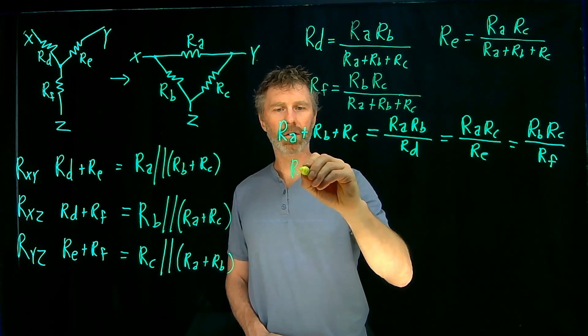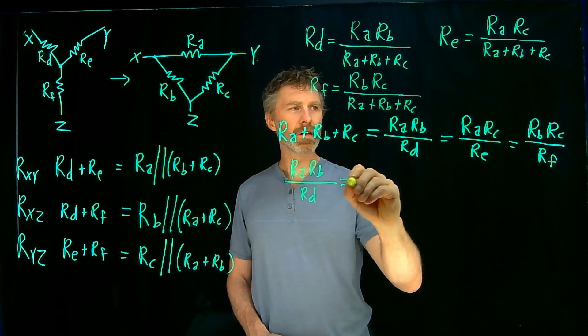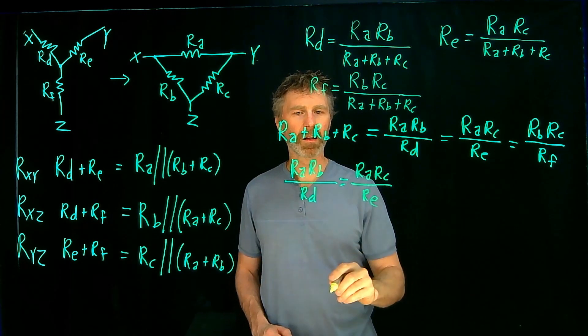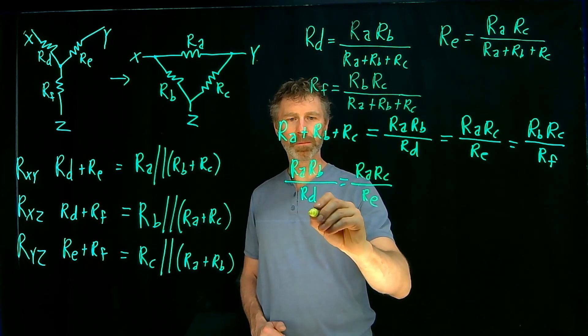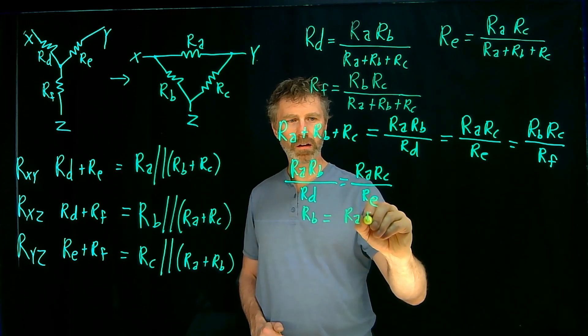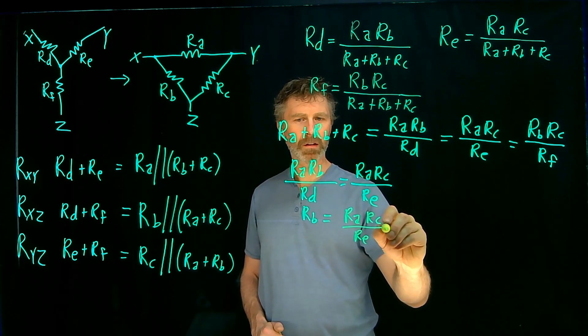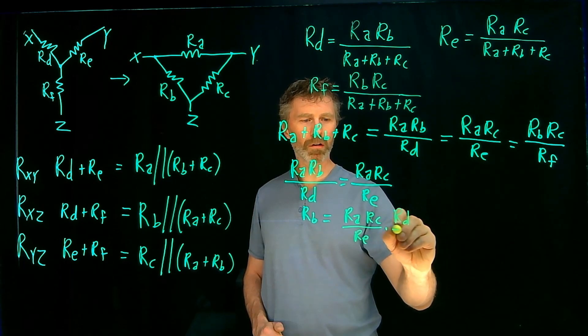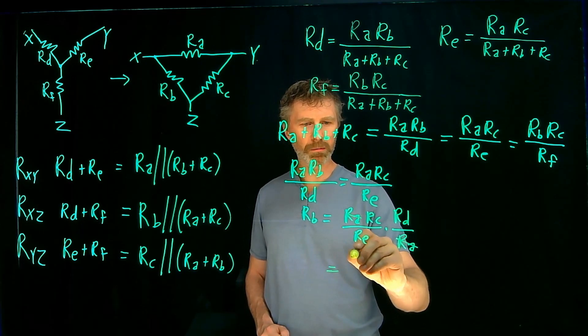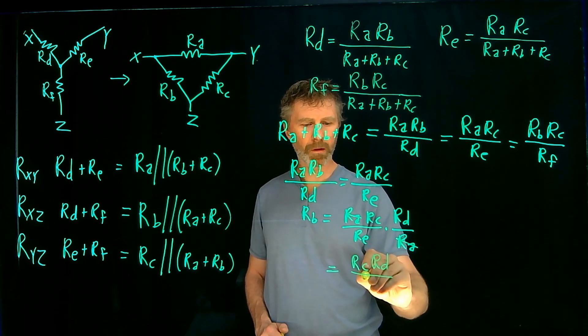Okay, so we have RA, RB over RD is equal to RA, RC over RE. I'm going to solve for RB. So I get RB is equal to RA, RC over RE times RD over RA. Those RA's cancel and we have an expression for RB that's simply in terms of RC, RD, and RE.